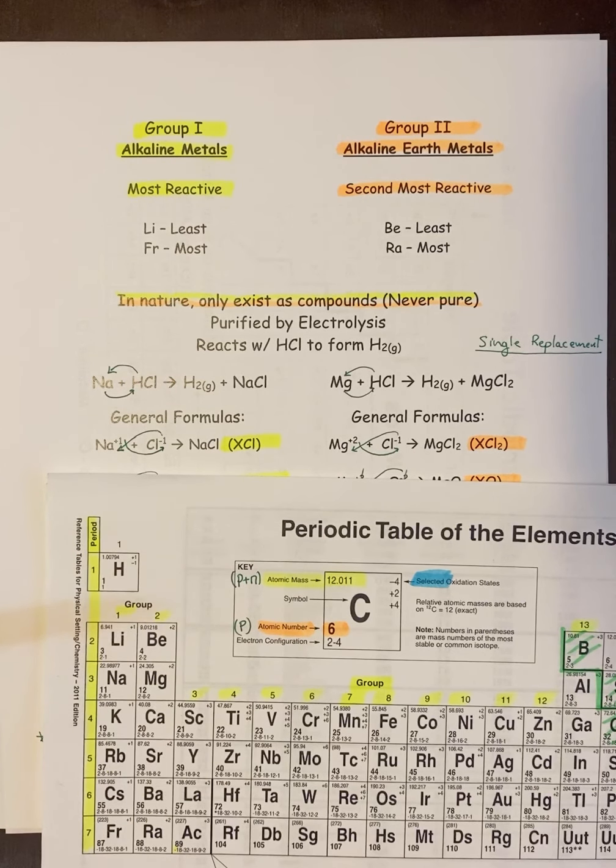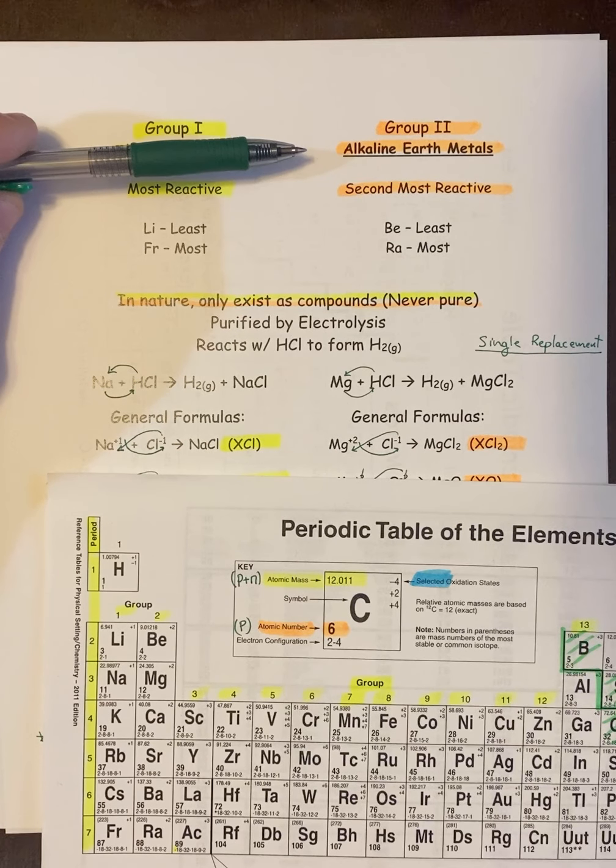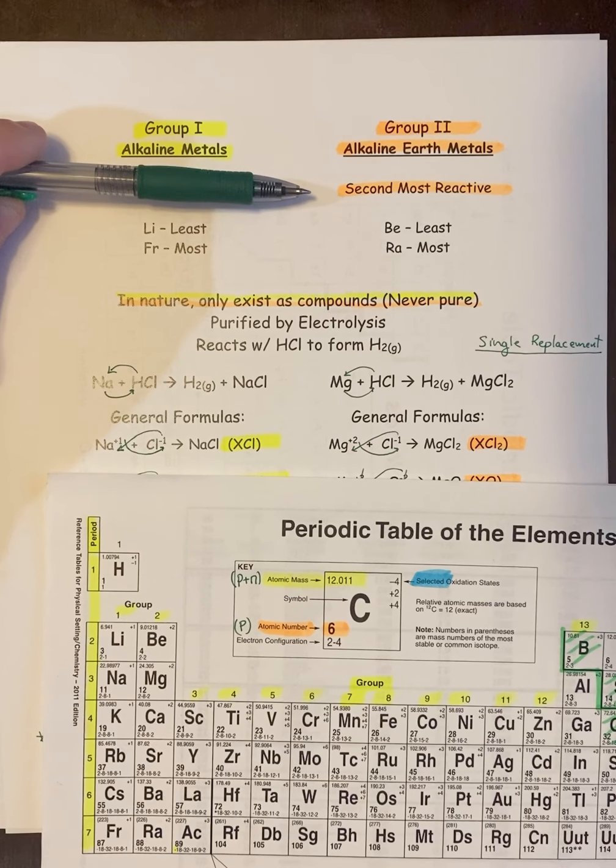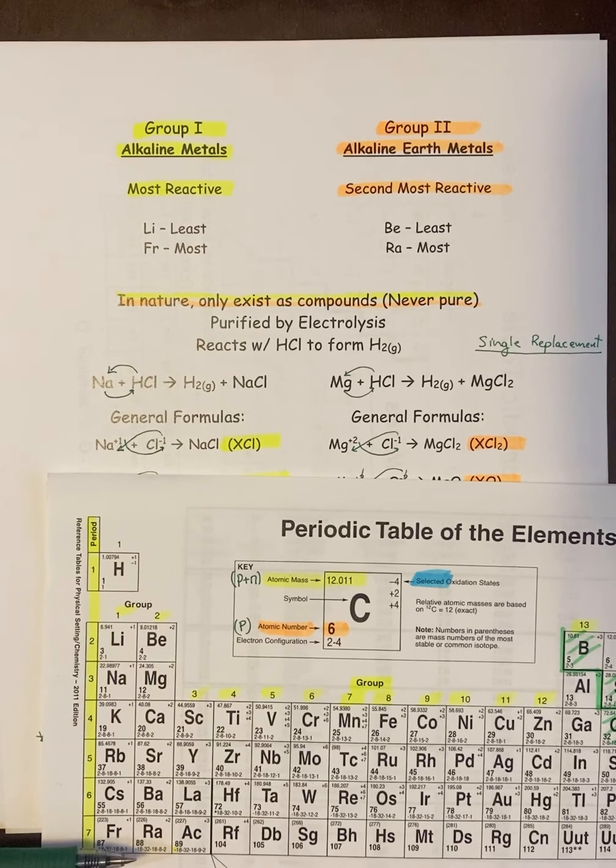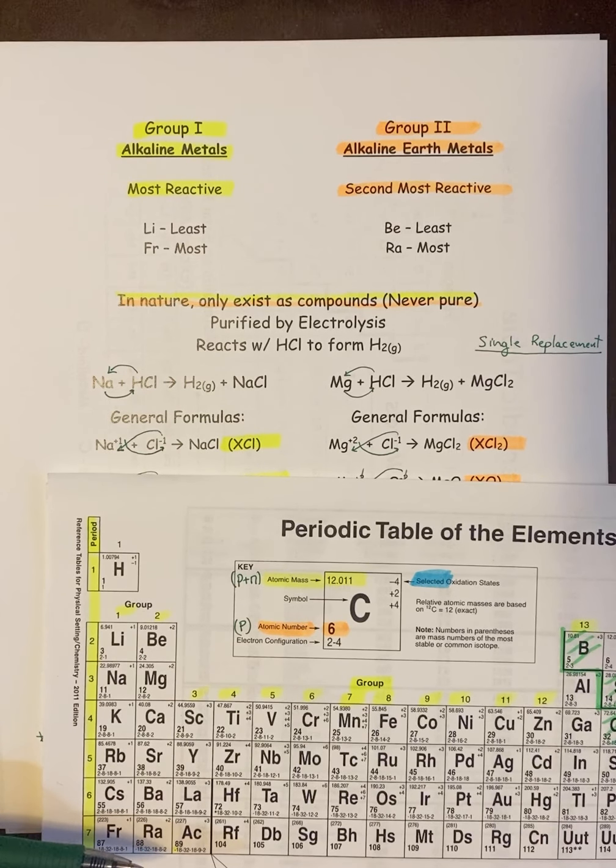Because of that, you will never find them in nature as pure compounds. This is actually true for group 1 and group 2, so we'll kind of link them together right now. Group 2 are called the alkaline earth metals. They're the second most reactive. They start from Be straight down. And again, Be is the least reactive. You put it in water, it might fizz a little, and all the way down to Ra, it might catch on fire.